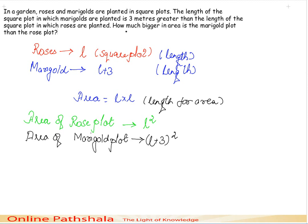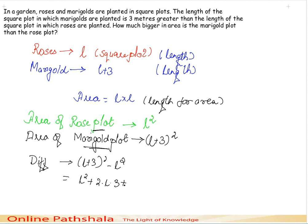To find how much bigger in area the marigold plot is than the rose plot, we take the difference: (L plus 3) squared minus L squared. Expanding, this gives L squared plus 2 times L times 3 plus 9 minus L squared, which simplifies to 6L plus 9.